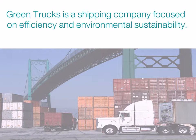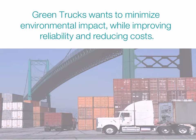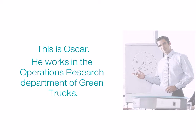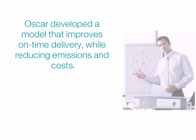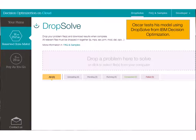Green Trucks is a shipping company focused on efficiency and environmental sustainability. Oscar works in the operations department at Green Trucks. He has developed an optimization model that improves on-time delivery while reducing emissions and costs. Oscar tests his model using the DropSolve service from IBM Decision Optimization.